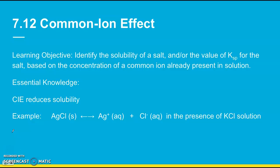Alright, the next section, 7.12, is on the common ion effect. And the learning objective is, identify the solubility of a salt and or the value of KSP for the salt based on the concentration of a common ion already present in solution. And so the essential knowledge here is, qualitatively, you want to know that the common ion effect reduces solubility. So if there's a common ion, the ionic salt is less soluble.